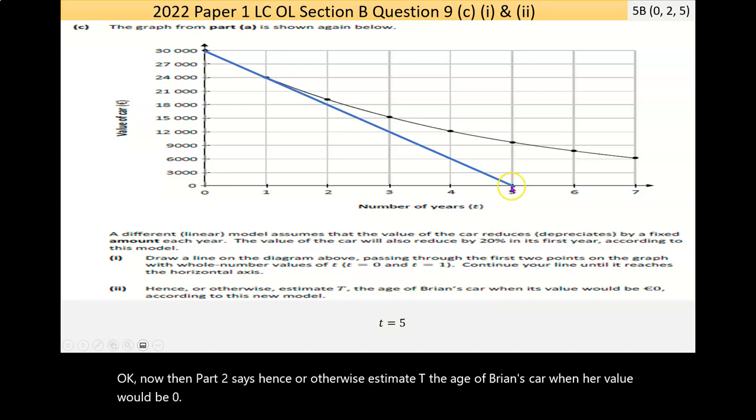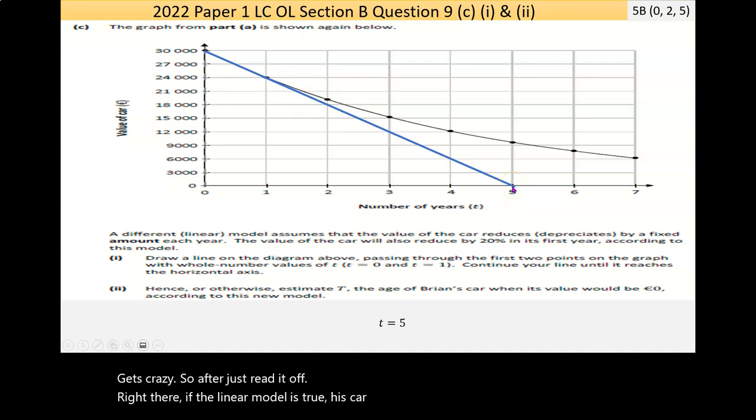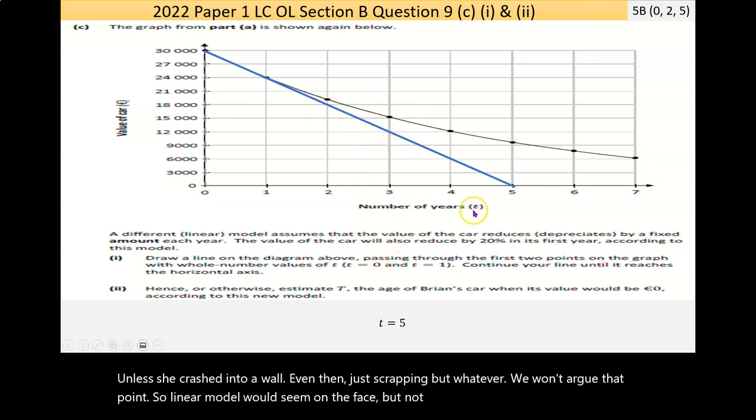Just read it off. Right there, if the linear model is true, his car will be worthless after five years. Now, anyone who has ever owned a car, cars don't become worthless after a certain number of years unless you crash into a wall. Even then, just scrappy, but whatever. We won't argue that point. So a linear model would seem on the face of it not to be very good, but that's the answer.